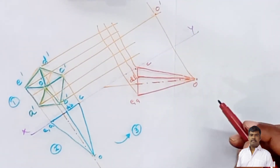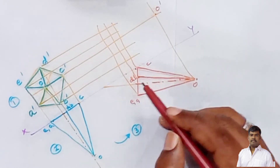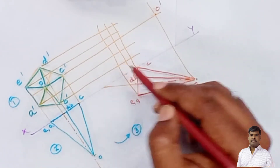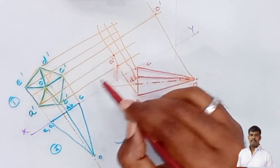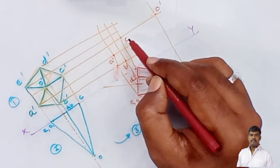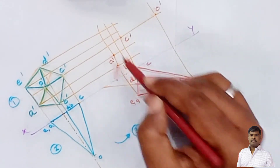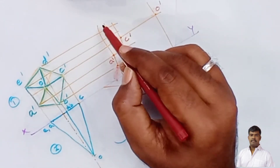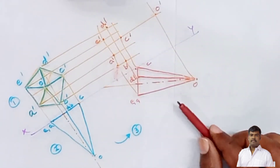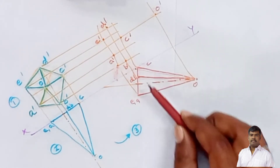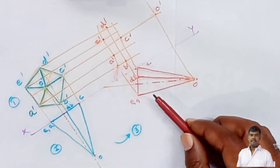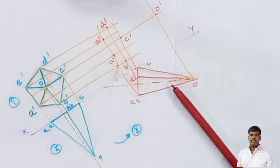Find the intersection points: o and o give o-dash. Then a gives a-dash, b gives b-dash, c gives c-dash, d gives d-dash (topmost), and e gives e-dash. In the front view, the base a-b-c-d-e is not fully visible.